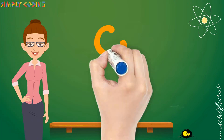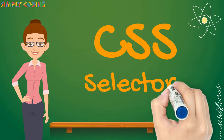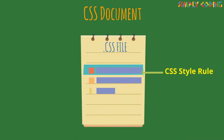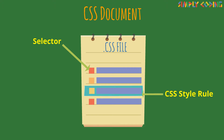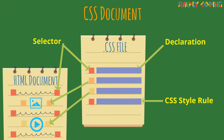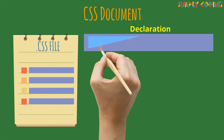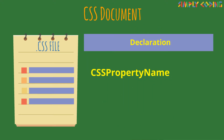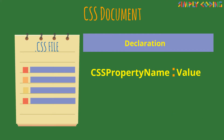In this video we are going to learn more about CSS style rules. Each CSS style rule consists of a selector and a declaration block. The selector points to the HTML element you want to style. The declaration block contains one or more declarations separated by semicolons. Each declaration includes a CSS property name and a value separated by a colon. A CSS declaration always ends with a semicolon, and declaration blocks are surrounded by curly braces.